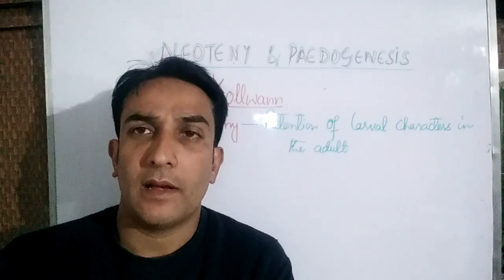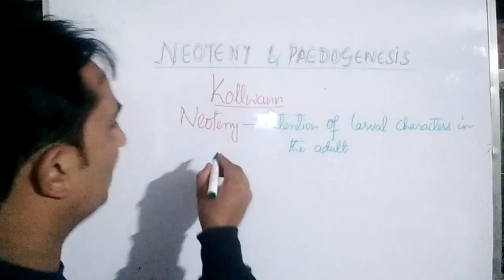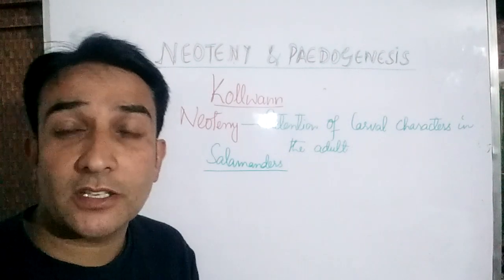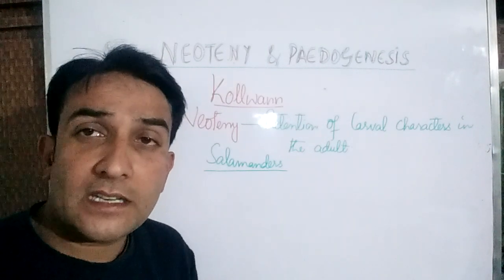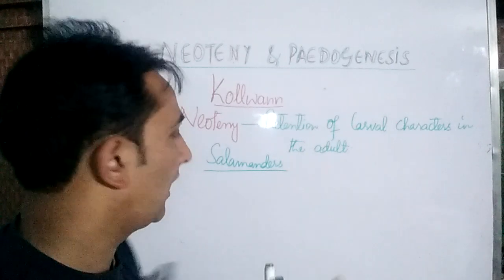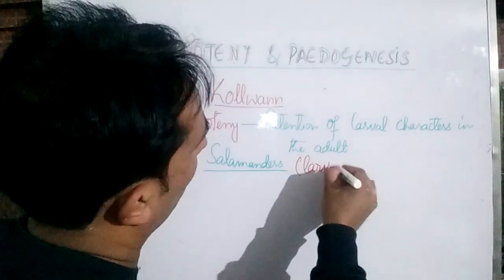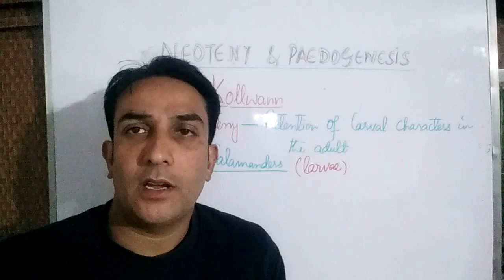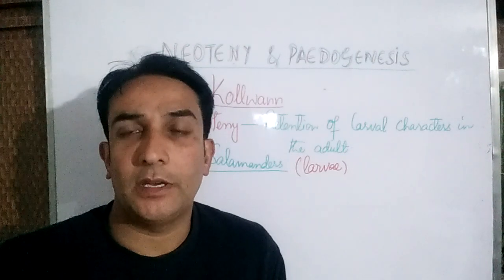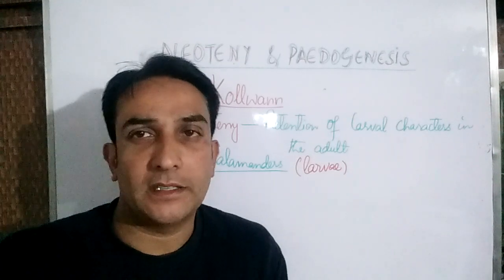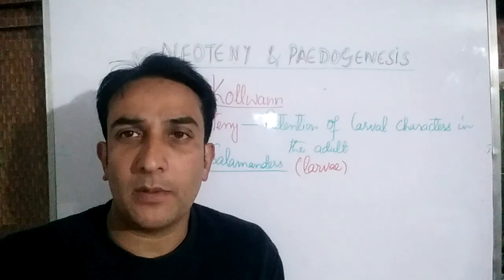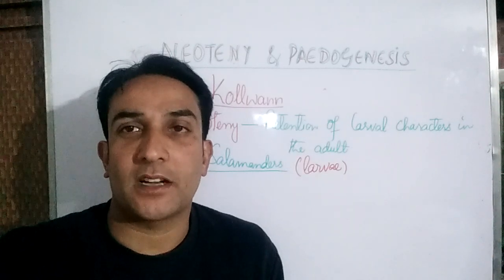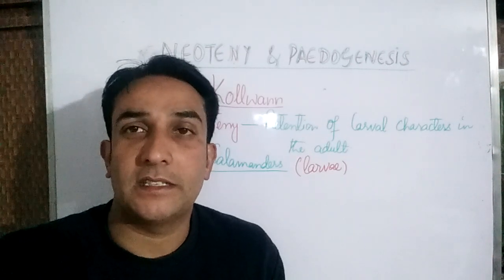For example, we take the salamanders. In the salamanders, the adult retains the gills which are found in the larvae. So the adult salamanders retain the gills of their larvae, and this is an example of Neoteny. Neoteny simply means retaining a larval character in the adult.